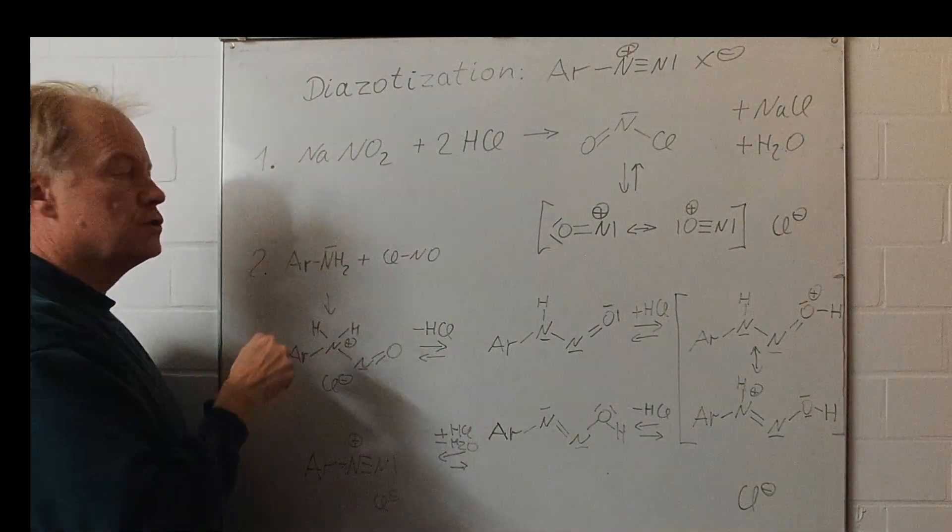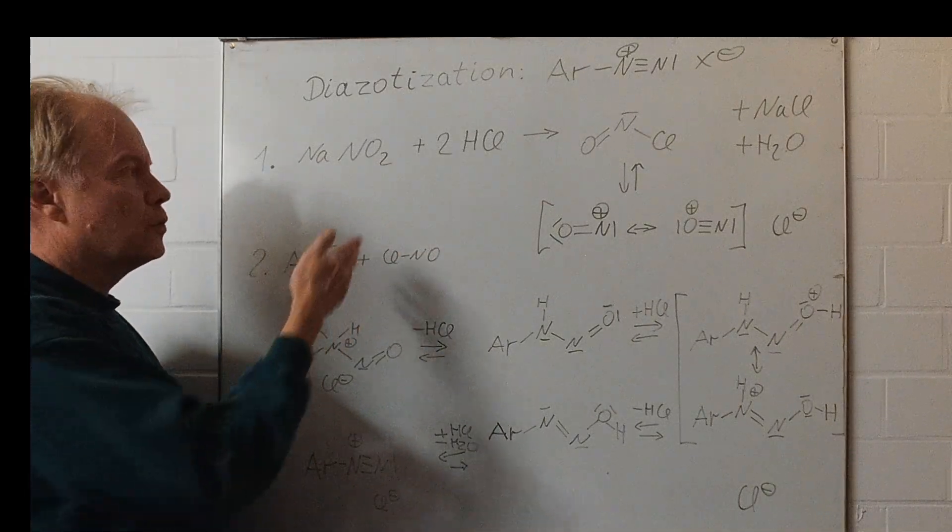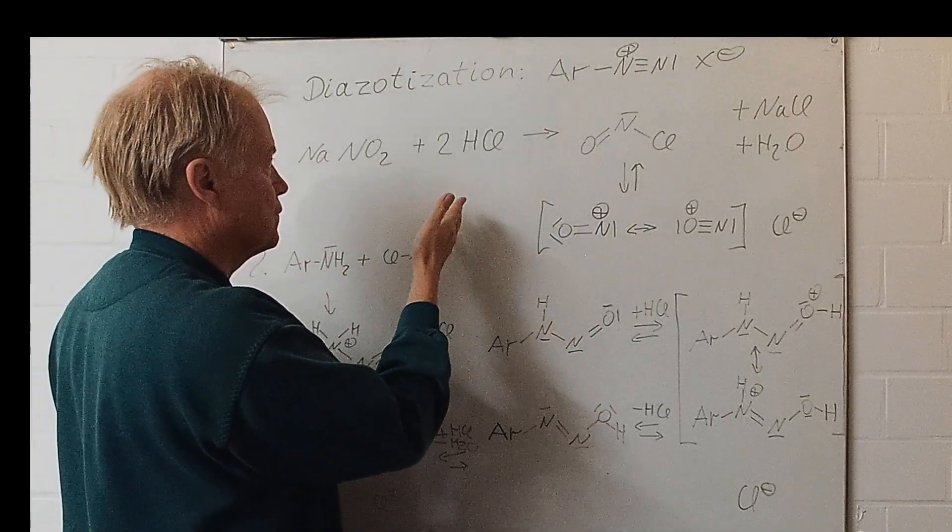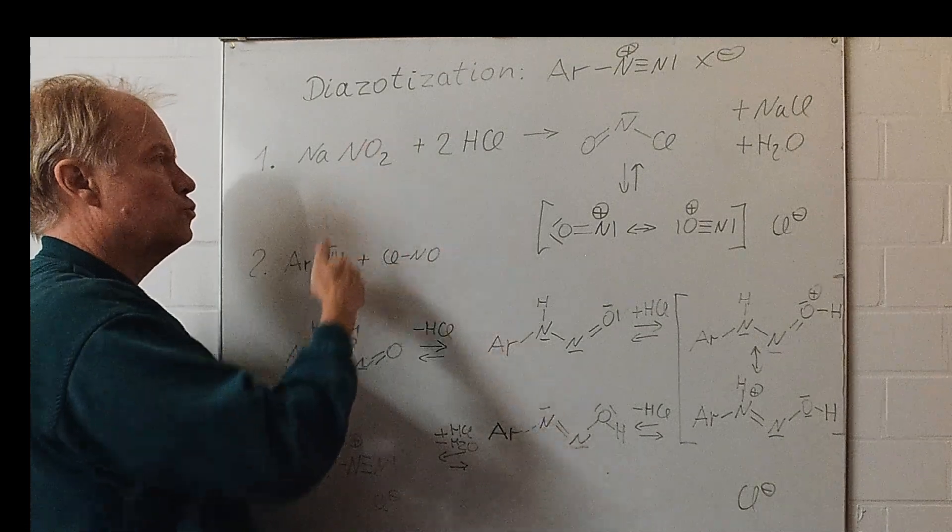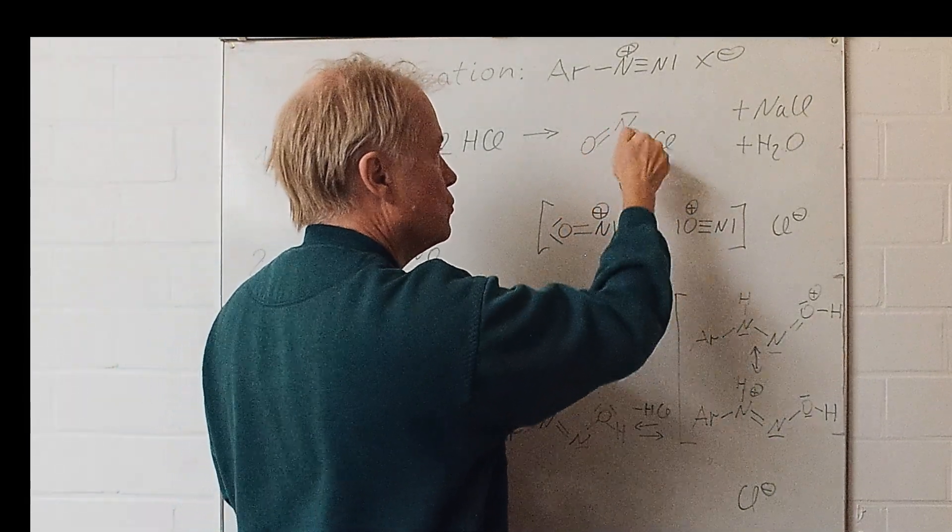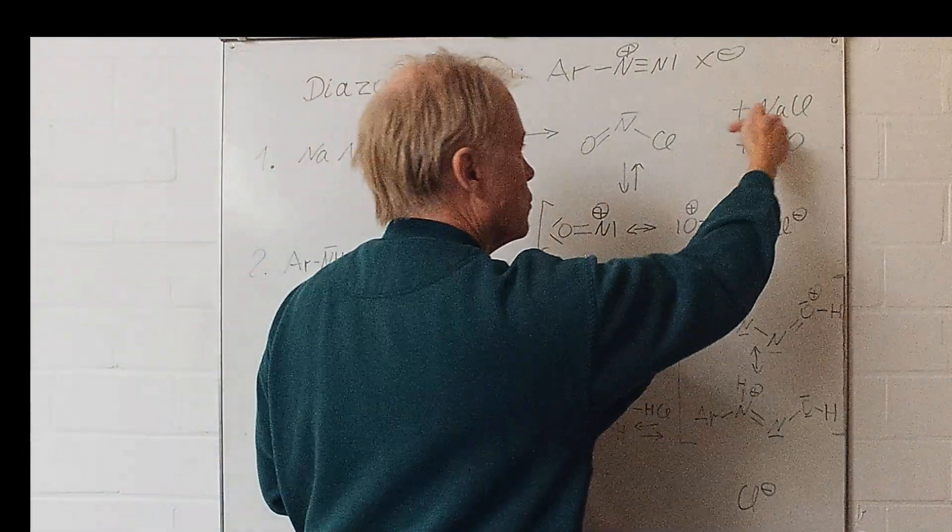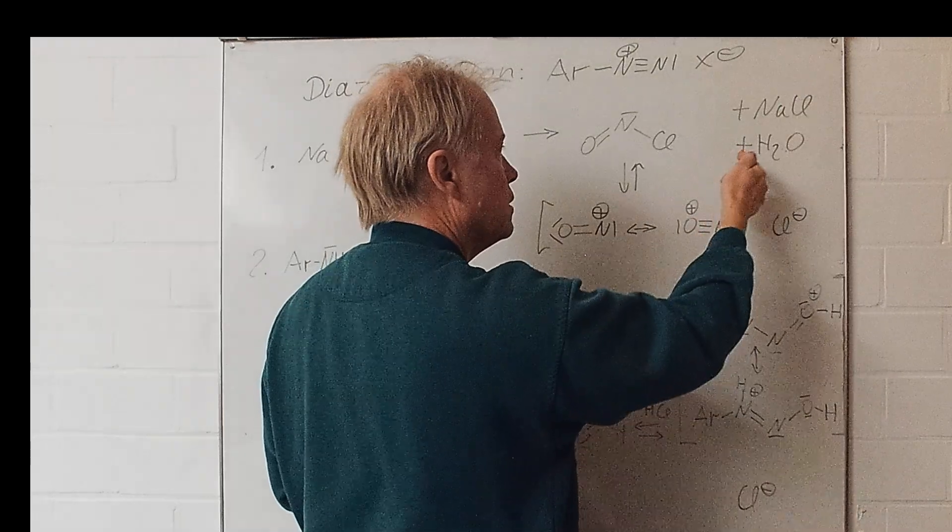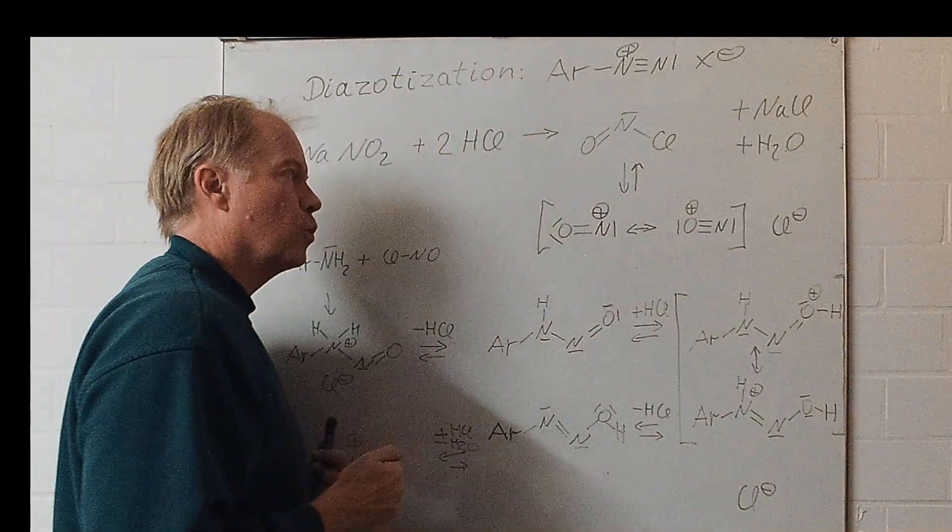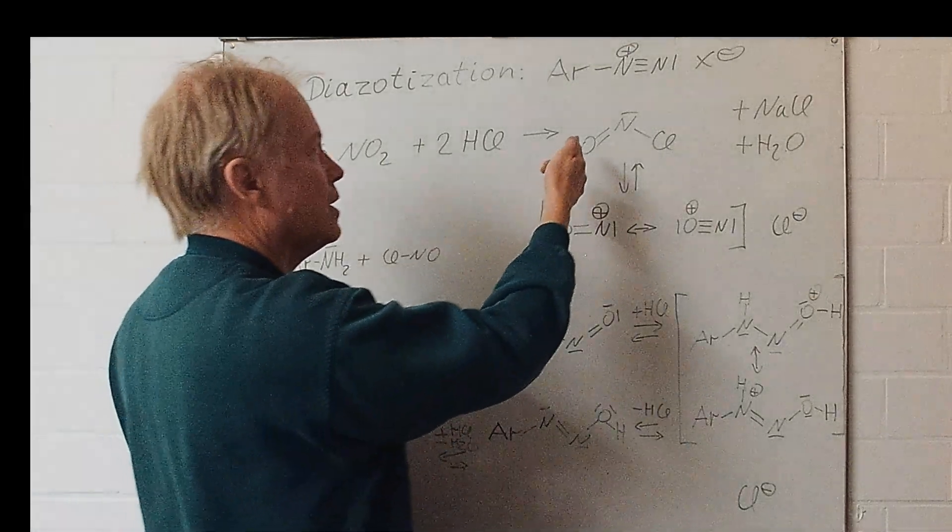Usually we start from sodium nitrite, for instance, with hydrogen chloride, two equivalents. Then the nitrosyl chloride is formed plus sodium chloride and one equivalent of water.